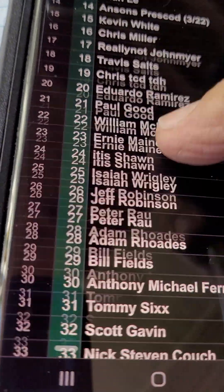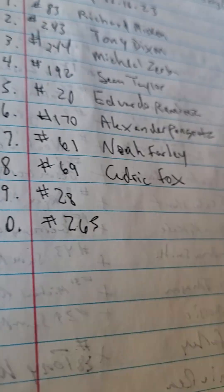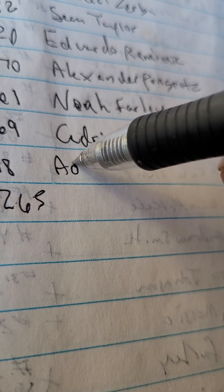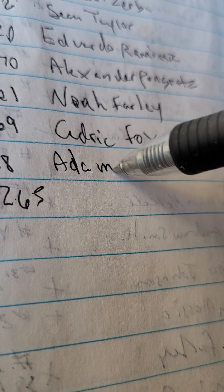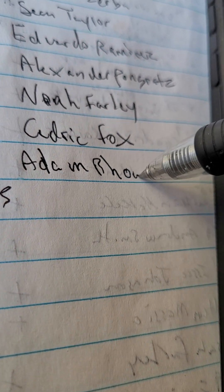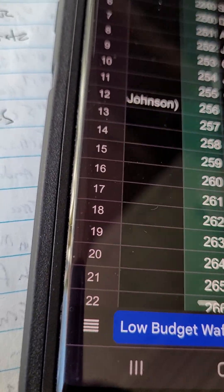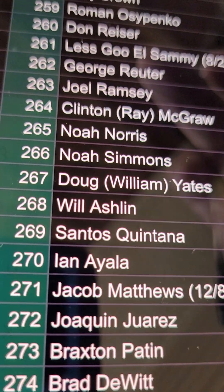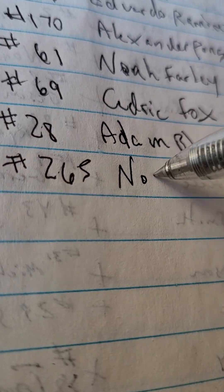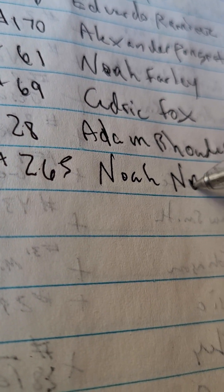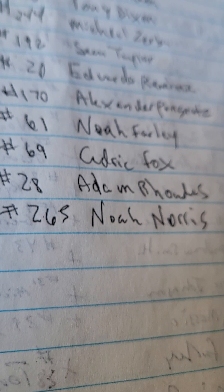Number 28, Adam Rhodes. And 265 is Noah Norris. And that's the last one.